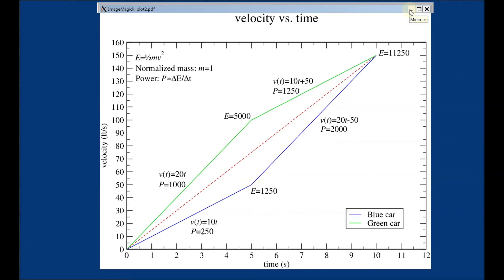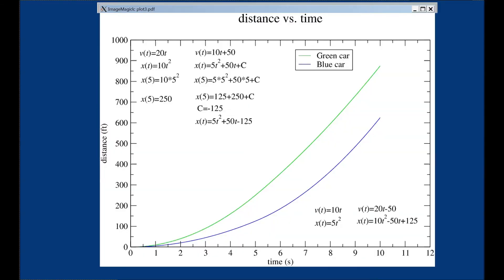Now let's plot the distance covered by these cars, just like we did with the straight line, to see how far they've gone in 10 seconds. You have to do this in two parts, because we have a straight line from 0 to 5 seconds, and then another straight line from 5 to 10 seconds, with different slopes.